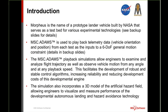Morpheus is basically a prototype lander vehicle that NASA has been developing, and the purpose is to develop new kinds of landing technology. The vehicle itself is a terrestrial vehicle — it's not designed to be used in space — but it allows us to increase the fidelity and readiness of technologies that eventually will be used in space.